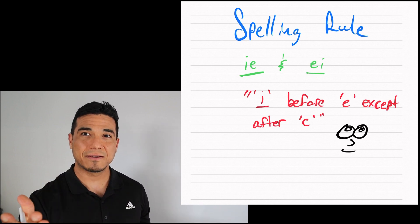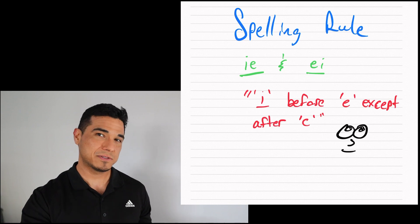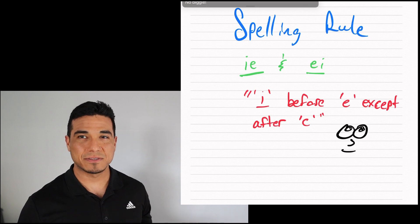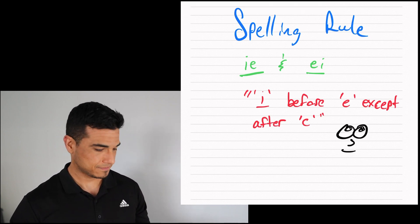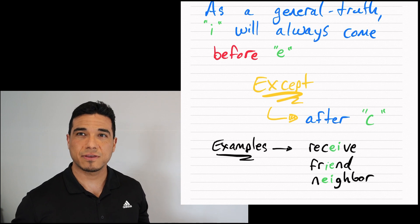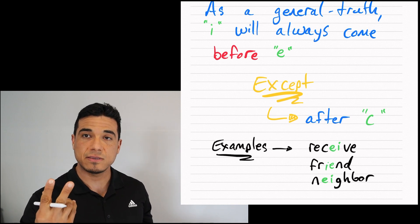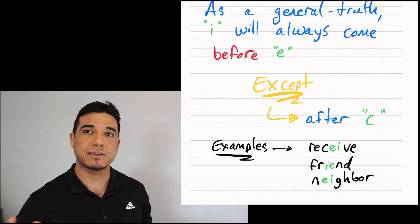However, again with English, we've got a multitude of exceptions, and this rule does not avoid such exceptions. So let's go ahead and dive a little deeper into the rule. As a general truth, I will come before E except after the letter C, in which case you would switch the ordering of I and E to E and I.